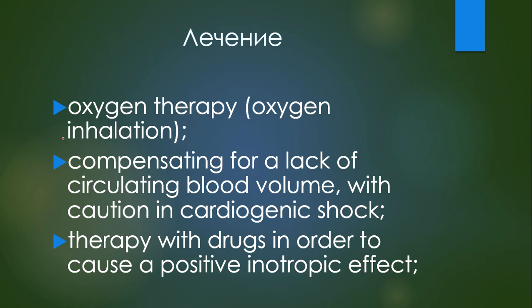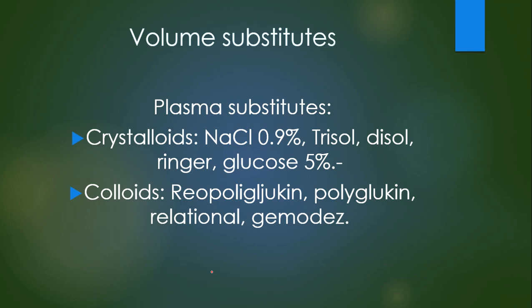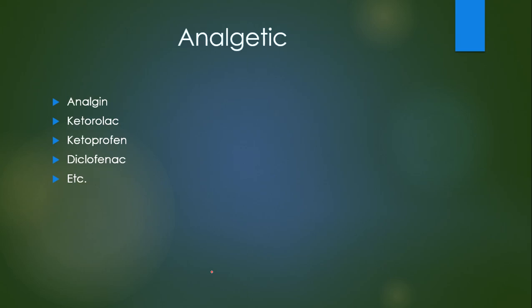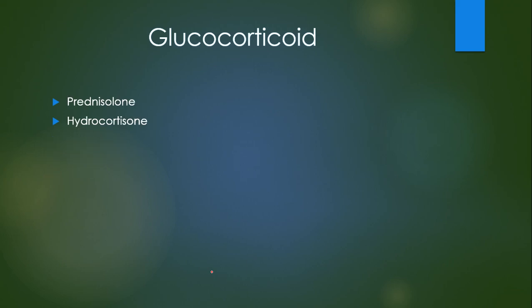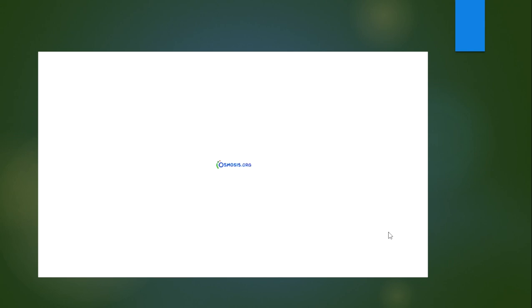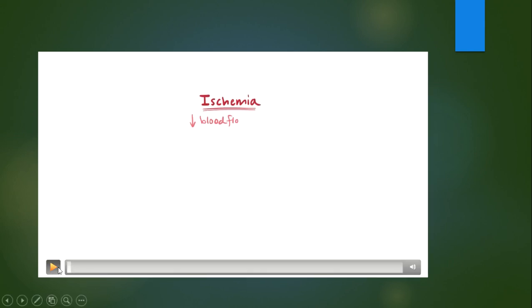Treatment: oxygen therapy; compensating for a lack of circulating blood volume — with caution in cardiogenic shock, because giving too much fluid in that case can cause pulmonary edema. Drug therapy to cause a positive inotropic effect. We use volume substitutes, narcotic and non-narcotic analgesics, and glucocorticoids such as prednisolone. A small video about shock will be shown.